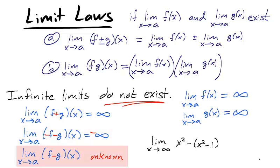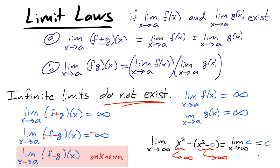Take for instance the function x squared minus (x squared minus 1). As x goes to infinity, x squared and x squared minus 1 both go to infinity. However, x squared minus x squared is 0, and you're left with positive 1, and the limit as x goes to infinity of 1 is 1. We can change this example, replacing the value 1 with the constant c for any c, and we see that the limit of the difference of functions whose limit is positive infinity can be any value we choose. Therefore, it is not able to be determined.